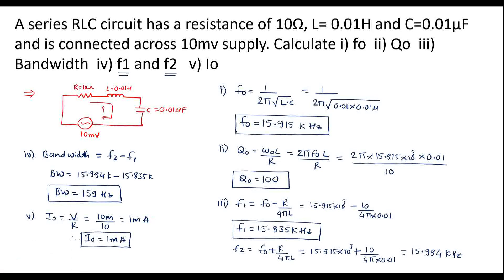Thus we found resonant frequency F0, quality factor Q0, F1, F2, bandwidth, and I0. Thank you for watching.